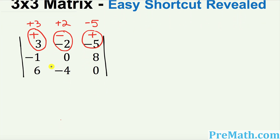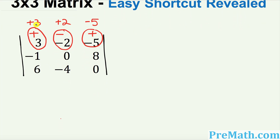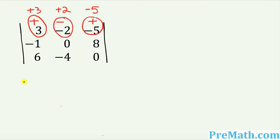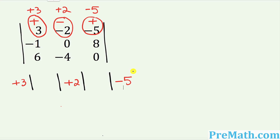Look at these numbers: positive 3, positive 2, and negative 5. I'm going to write down positive 3 up here with a box next to it, then positive 2 with a box next to it, and finally negative 5 with another box next to it. These boxes will hold our 2×2 determinants.